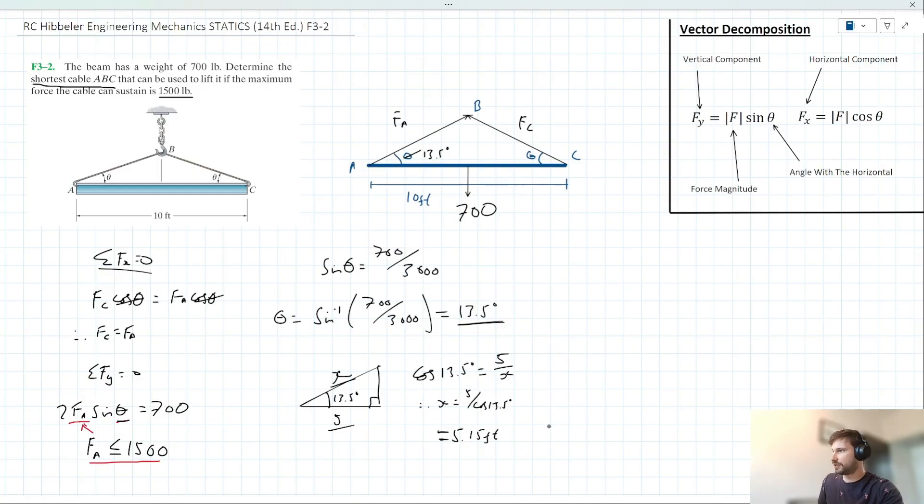And when we note that that length represents half the length of cable ABC, we can multiply that by 2, and we can say, therefore, length ABC is equal to 10.3 feet.